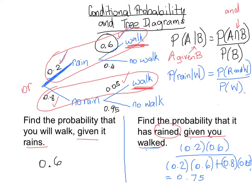To quickly recap: the probability of rain given that you walked is equal to the probability of rain and walk, over the probability of walking in general. Remember that the probability of walking in general accounts for both rain and walk, and no rain and walk.